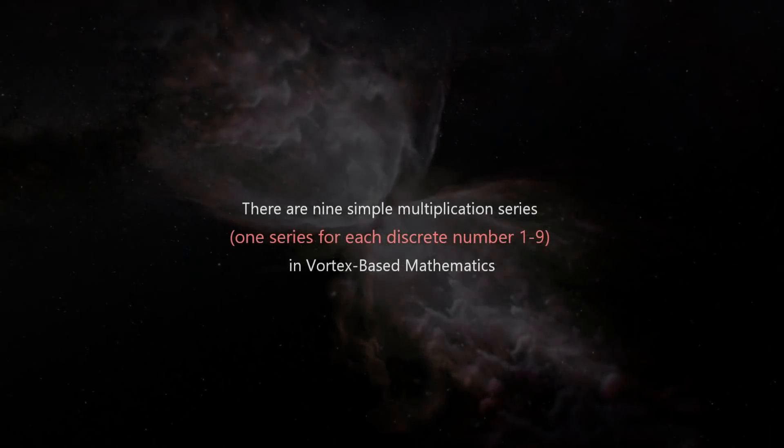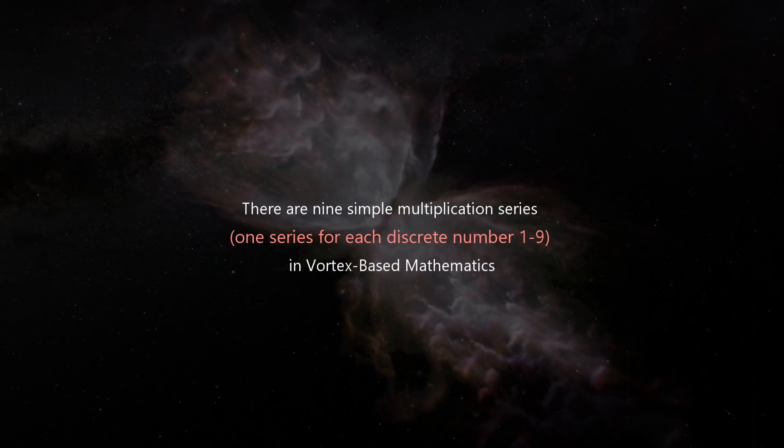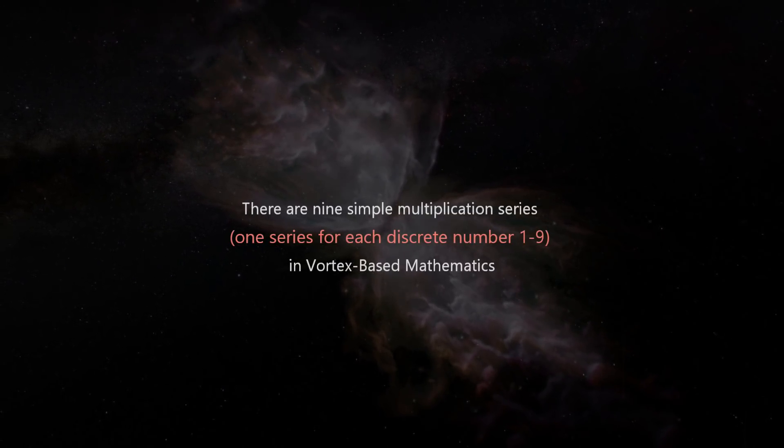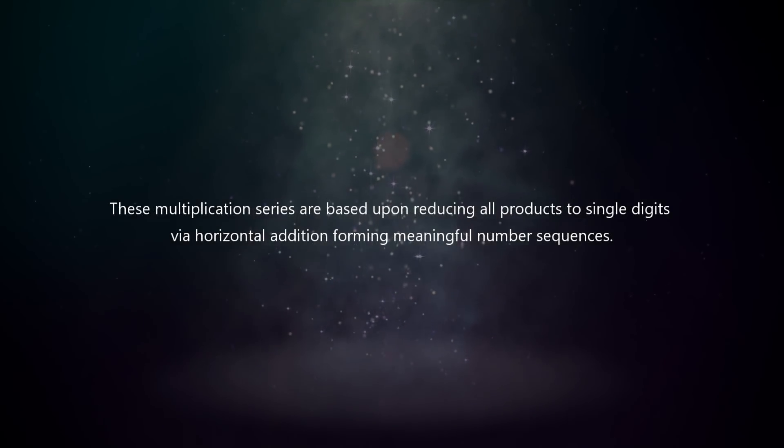There are nine simple multiplication series, one series for each discrete number one through nine. In vortex based mathematics, these multiplication series are based upon reducing all products to single digits via horizontal addition, forming meaningful number sequences.